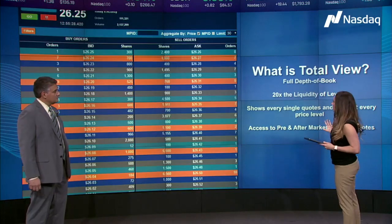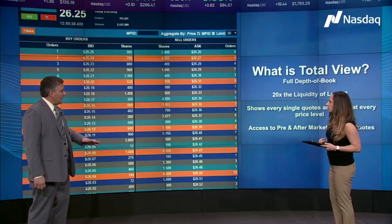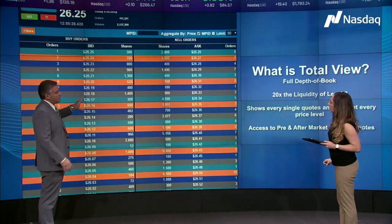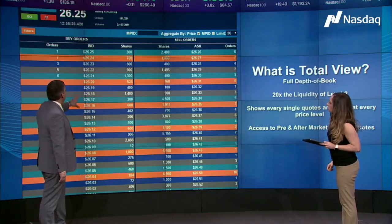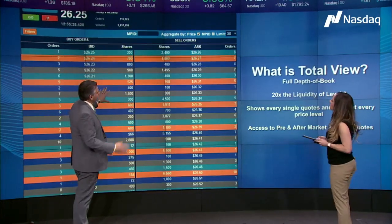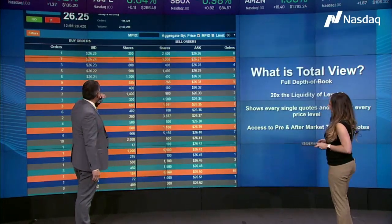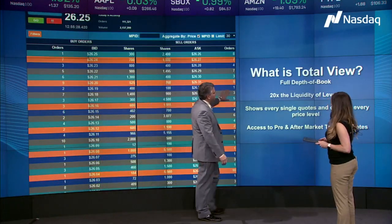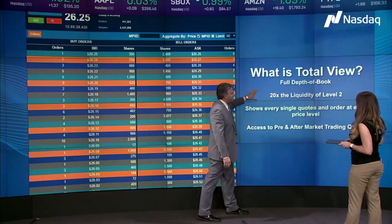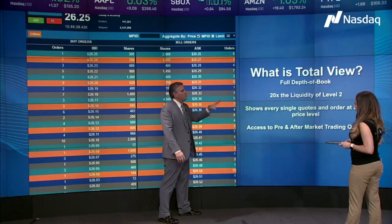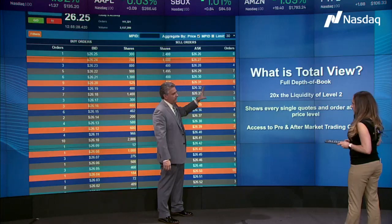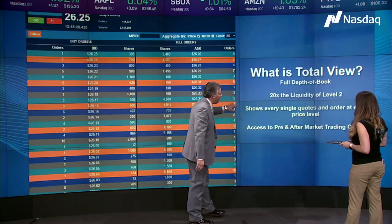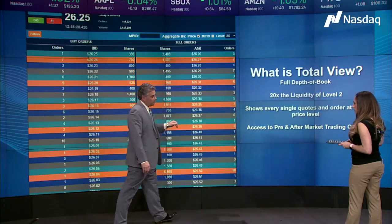Let's run through what Total View is and how traders are using it. Basically, what we've got right here is we're looking at a stock showing you how Total View works. I've been using Total View since the day it ever came out. The thing you have to be careful about is how to set it up — I have three very important columns. Total View is a full depth of book. This gives you 20 times more data than Level 2 does. Level 2, to me, has personally been out of business since the 90s. Total View is the way you're supposed to look at it. It basically shows you every single quote at every single price level.